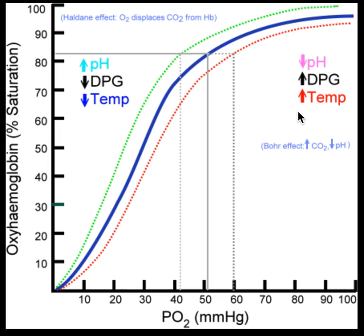Hopefully you got to the idea that in high metabolic rate tissue — when you have a really highly active tissue — your goal from the point of view of oxygen would be to enhance the delivery of oxygen. The way that hemoglobin actually behaves is that if it encounters an area where the pH is low, DPG is high, or temperature is high, it is going to right-shift its curve. Let's look at what that means.